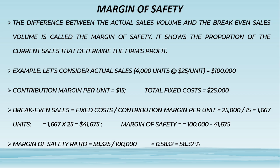Example: Let's consider actual sales as 4,000 units at the rate of $25 per unit, giving $100,000. Contribution margin per unit is $15. Total fixed cost is $25,000. Break-even sales = fixed cost divided by contribution margin per unit = $25,000 divided by 15 = 1,667 units. Multiplying 1,667 by $25 gives $41,675.